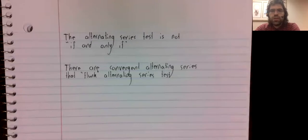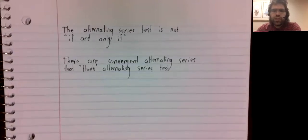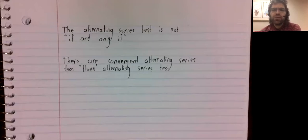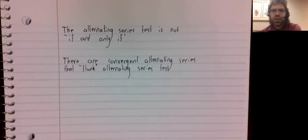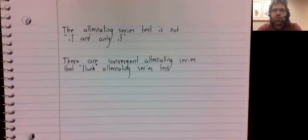We'll end this video with the observation that the alternating series test can never tell you that an alternating series diverges. If an alternating series does not satisfy the conditions of the alternating series test, it might still converge, and you just can't use the alternating series test to determine that fact.